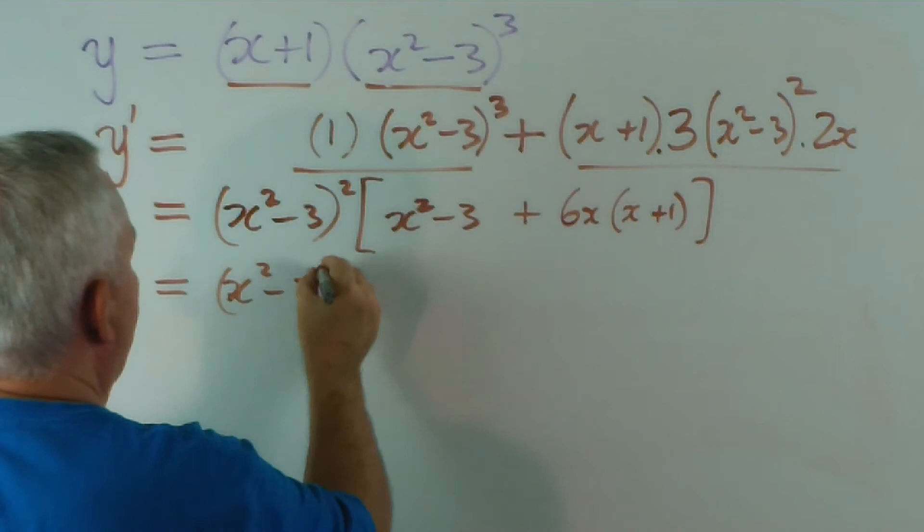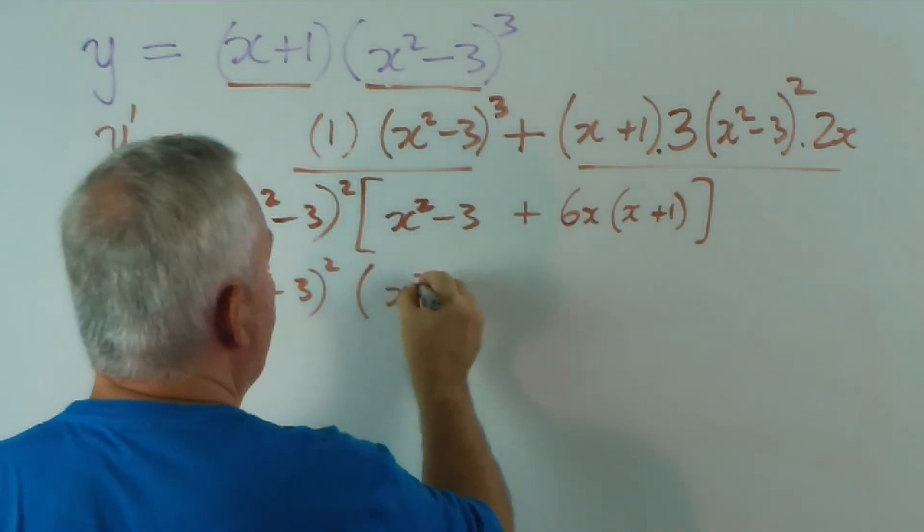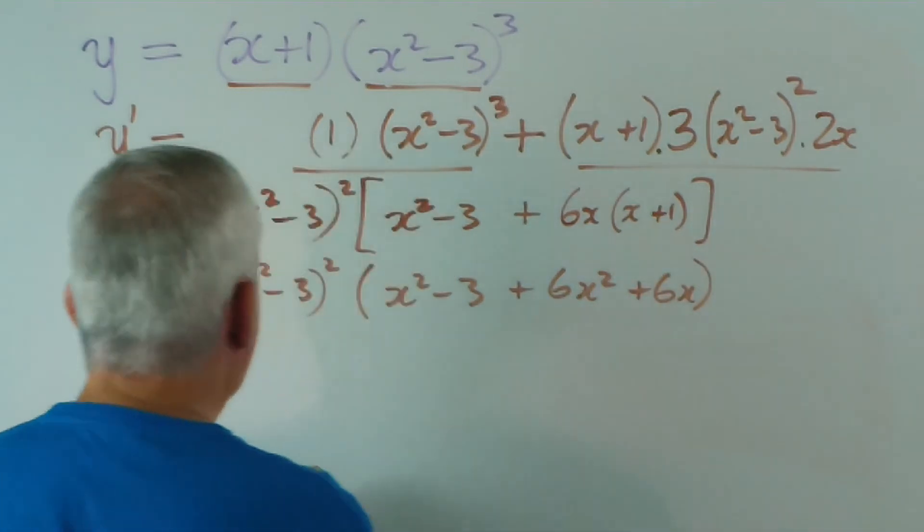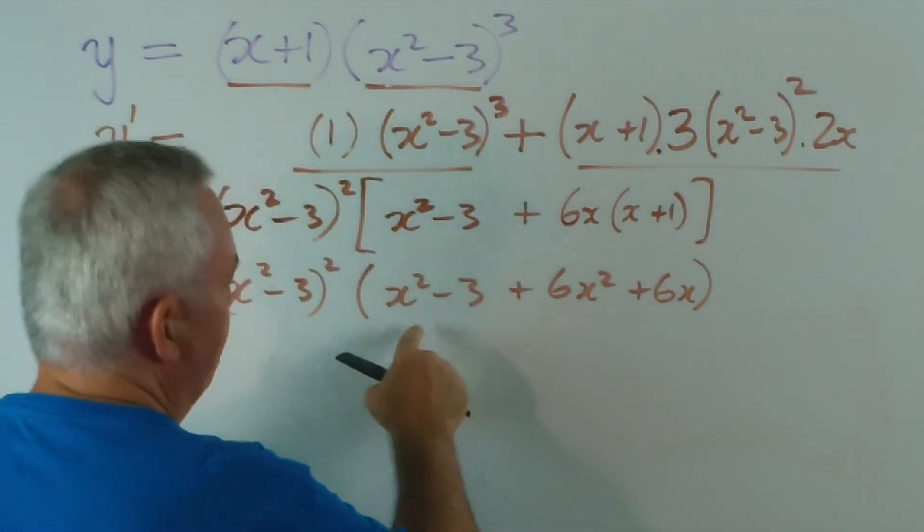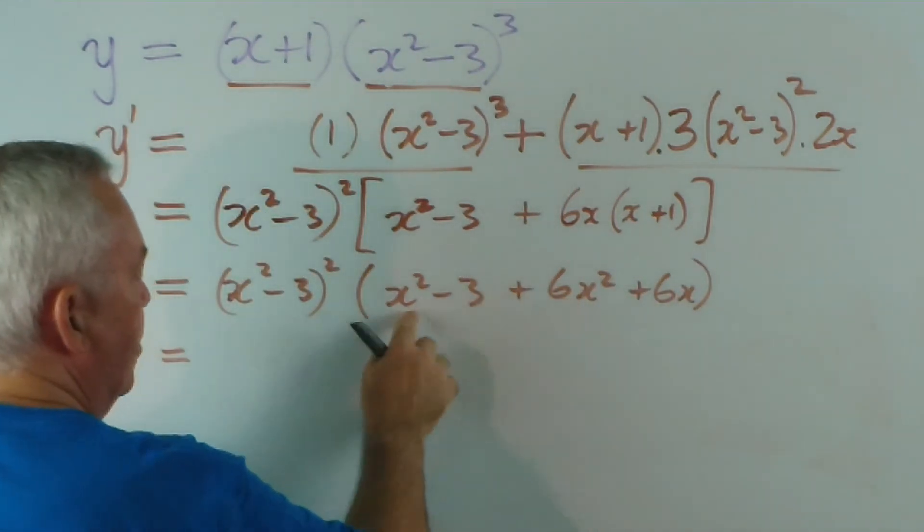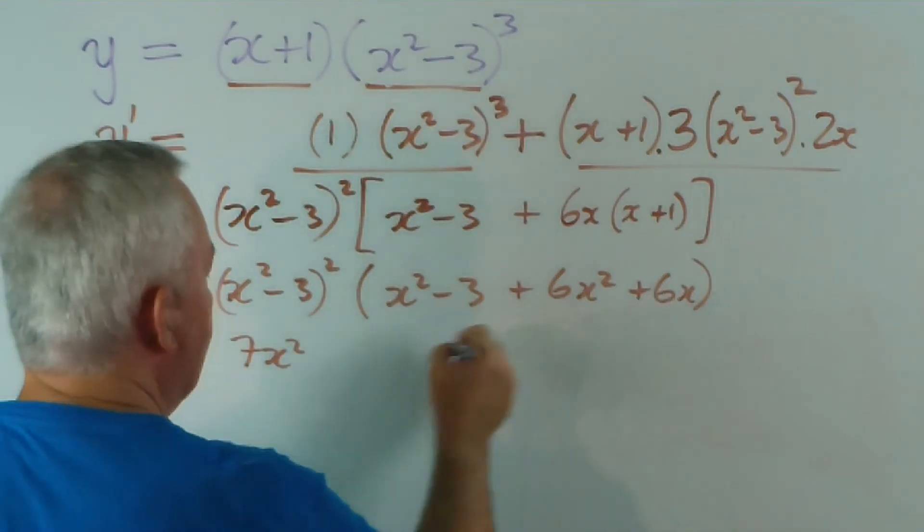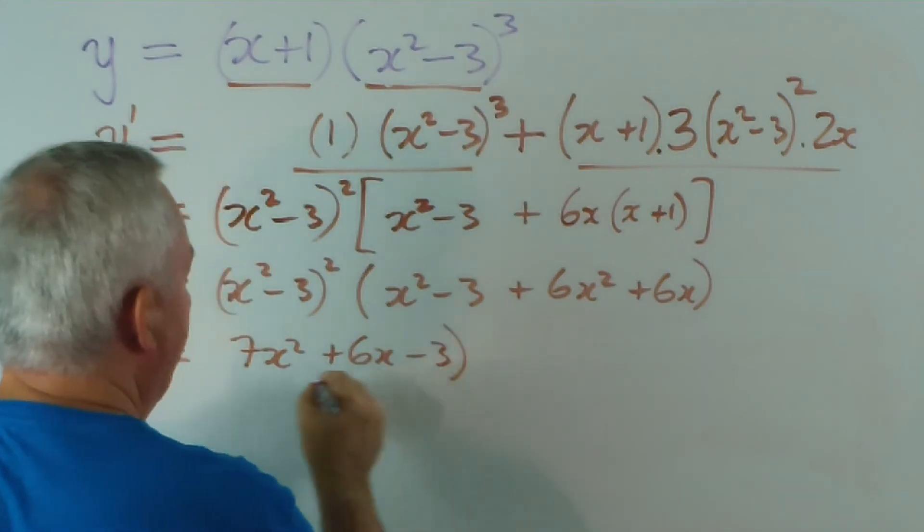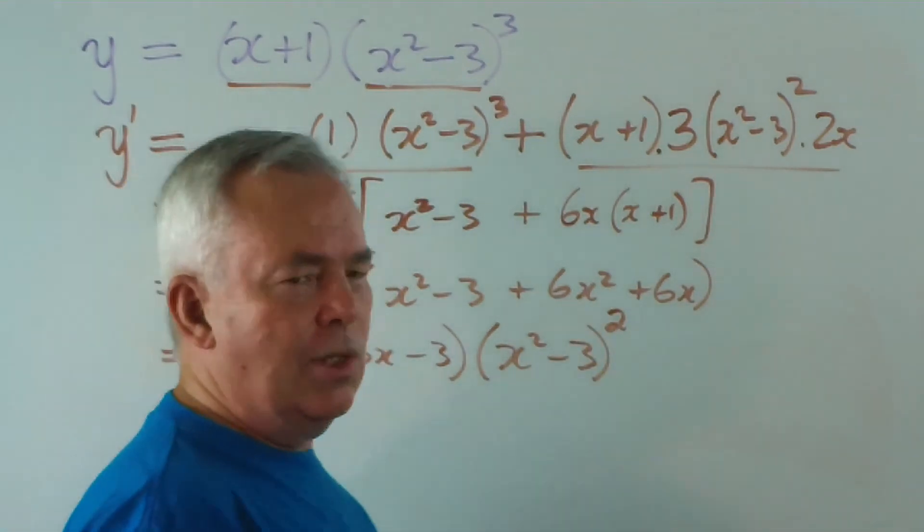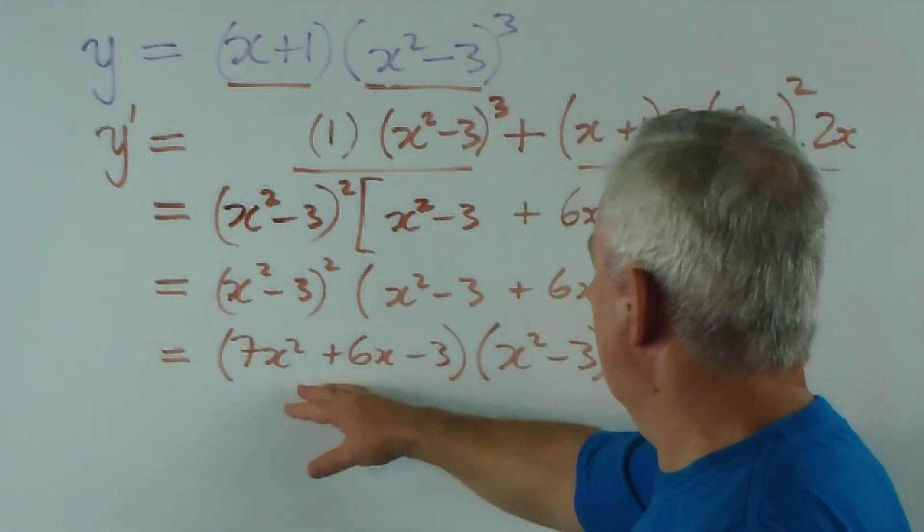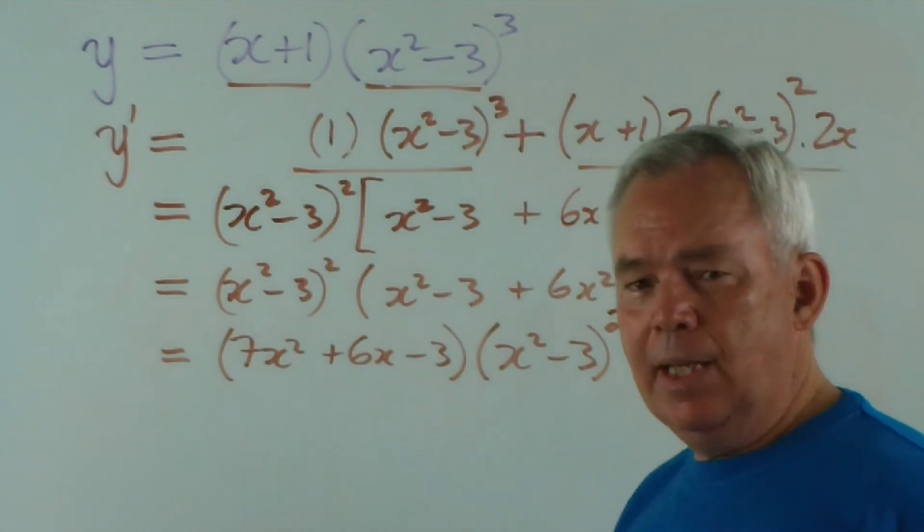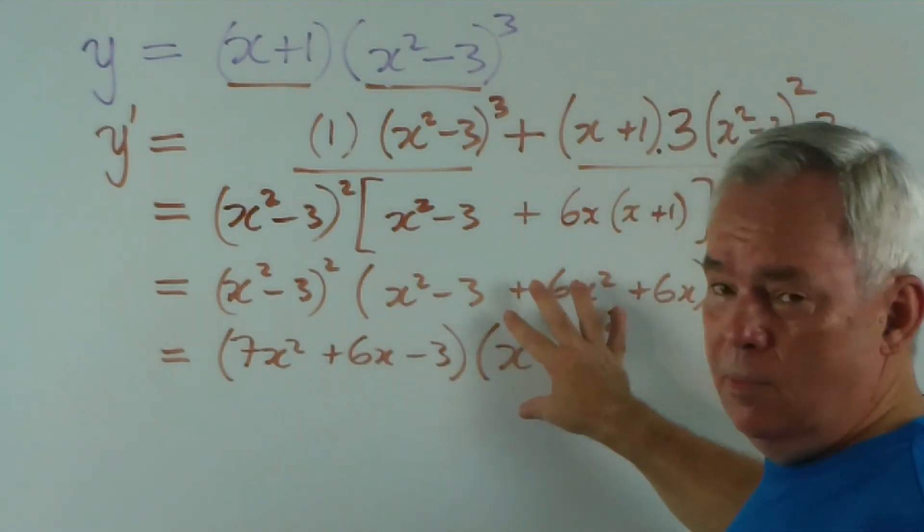x squared minus 3 squared. And in here we're going to have x squared minus 3 plus 6x squared. That product. And 6x times 1 is 6x. And this is going to be x squared plus 6x squared. I'm going to write this first, by the way, and then explain why. 6x squared and x squared is 7x squared plus 6x minus 3. And I'm going to write this second. And because there's a kind of a convention with polynomials and in this kind of mathematics, we put the simpler function first and the more complicated, bigger powers later on in the expression.